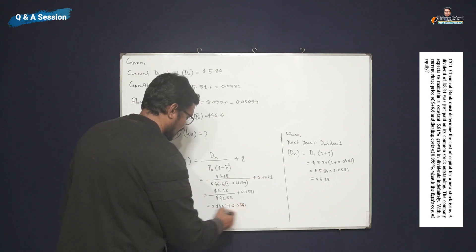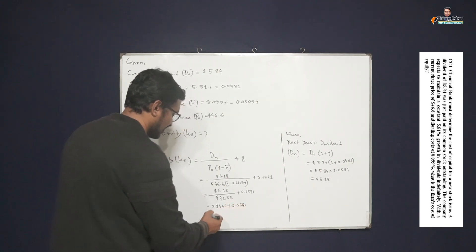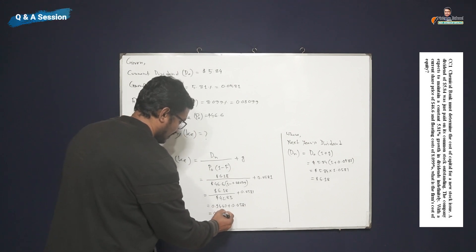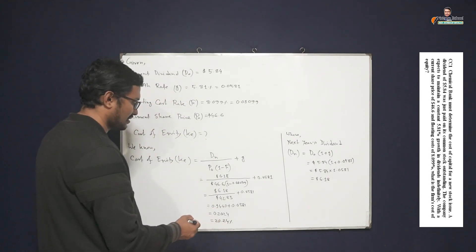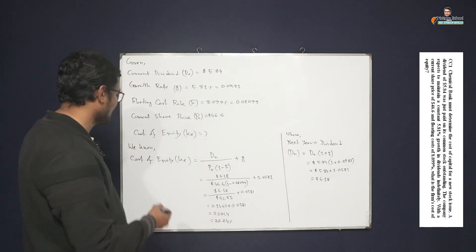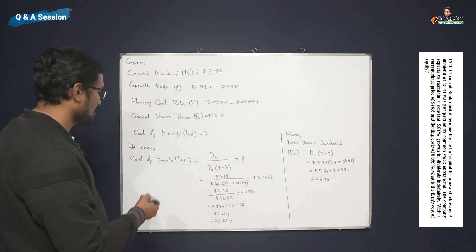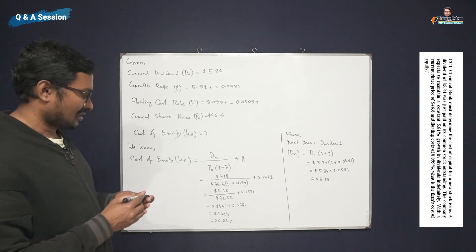And after addition, it will be 0.20024. It means 20.24%. So 20.24% should be the cost of equity.